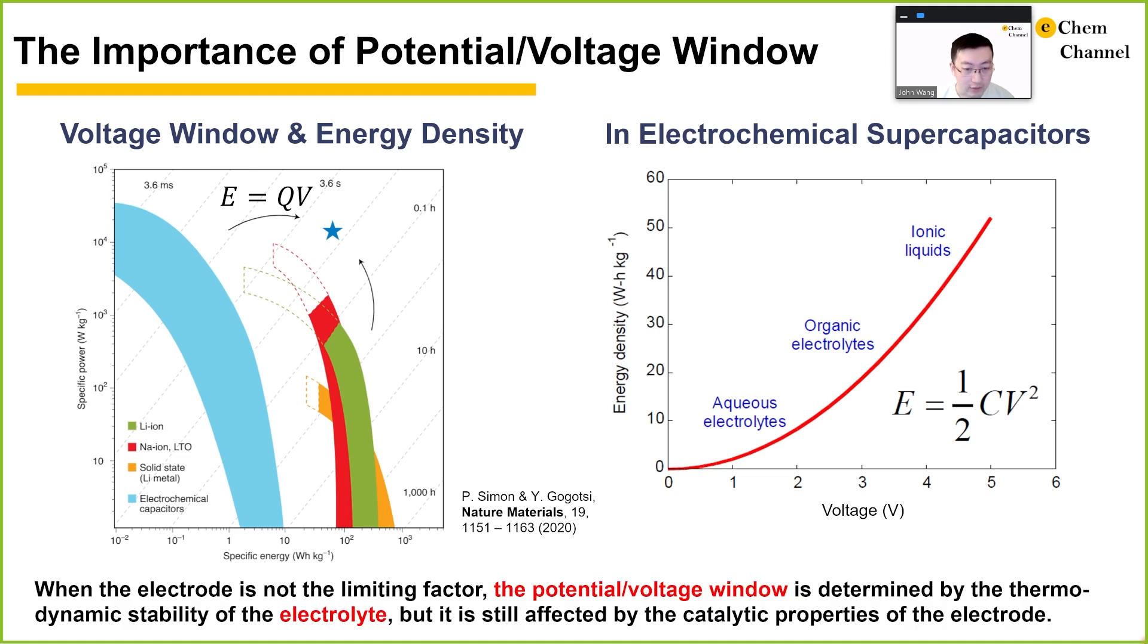When the electrode is not the limiting factor, the potential or voltage window is determined by the thermodynamic stability of the electrolyte, but is still affected by the catalytic properties of the electrode. Later in this video, we will switch the terminology from voltage window to potential window because we will focus on a single electrode instead of an energy storage device.